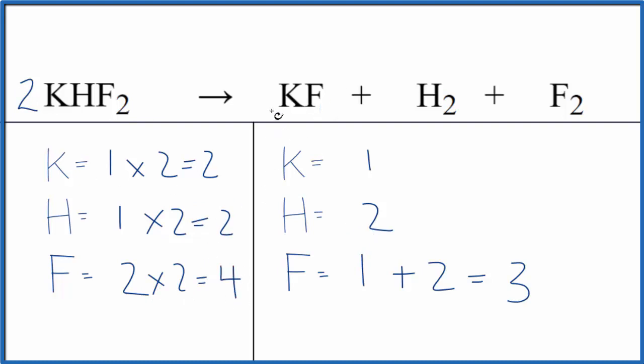On the product side, if we put a two in front of the KF, the potassium fluoride, one times two, that balances the potassiums. Let's update the fluorines. So now we have two times one, that's two, plus the two here. That gives us four, and we're done.